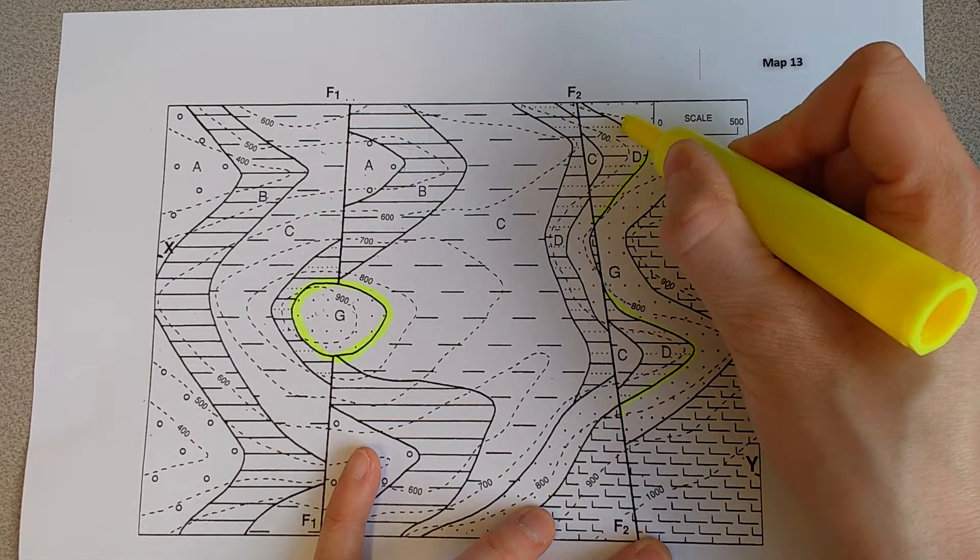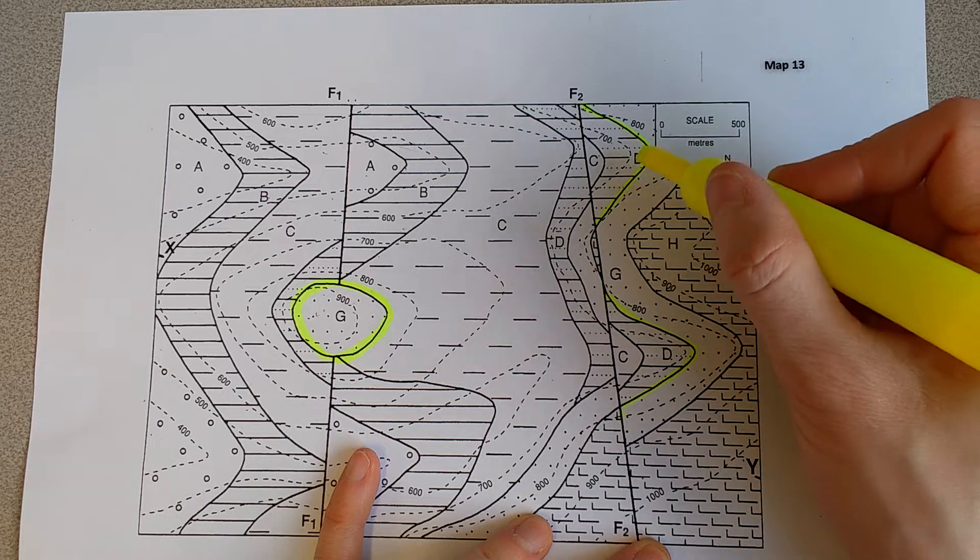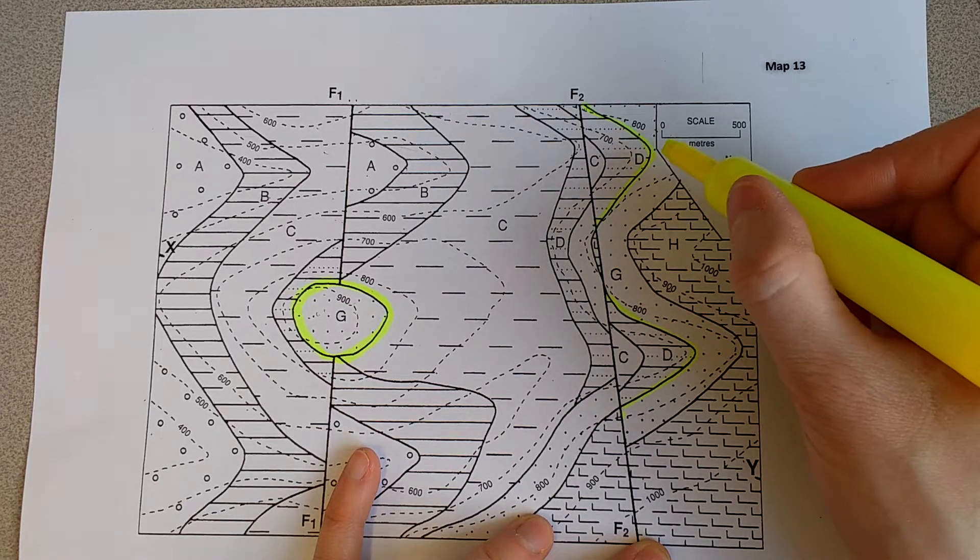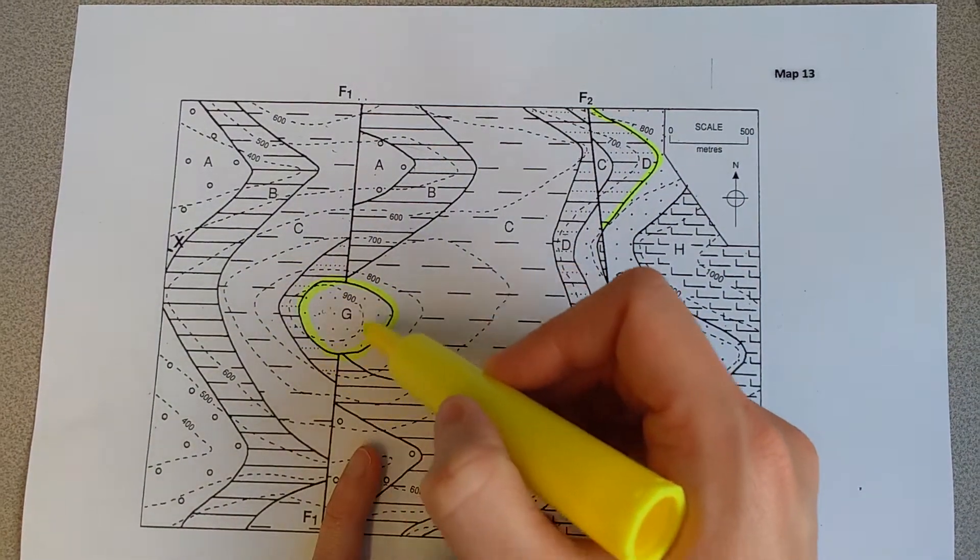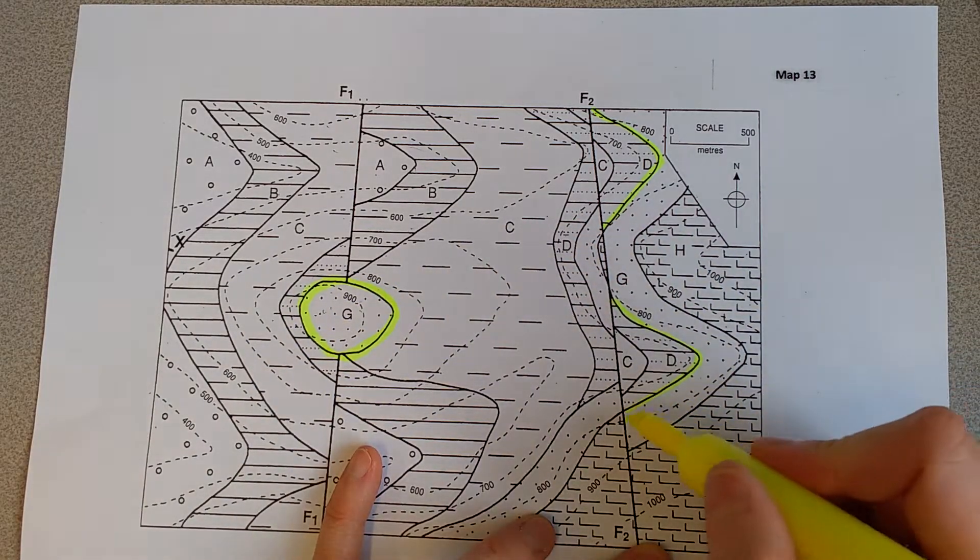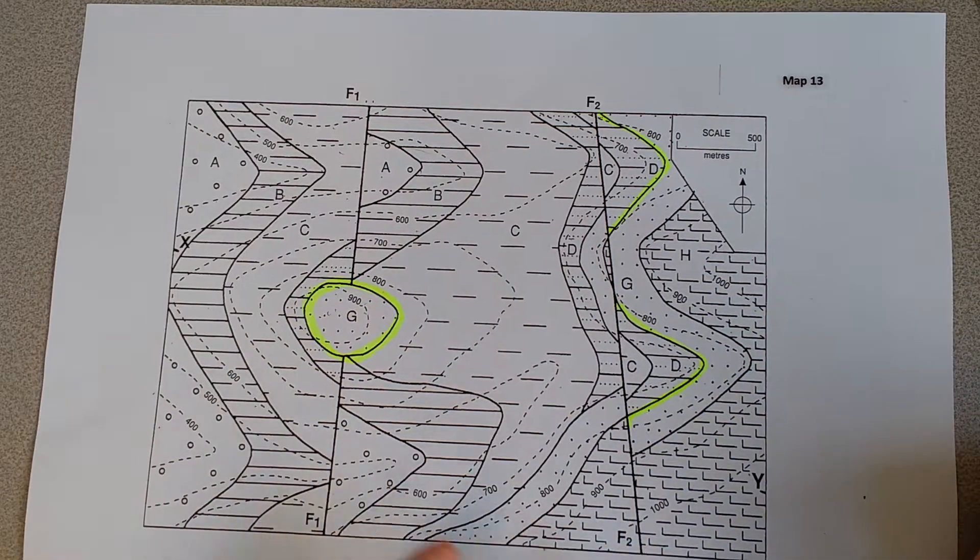Now this is a bit tricky because it's not that obviously cross-cutting the units here, but because I know that I've got this G sitting in the middle of my map, I know that elsewhere on the map it's also an unconformity.